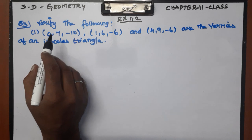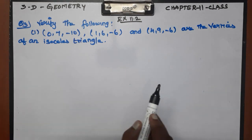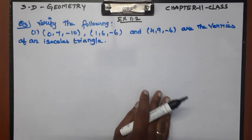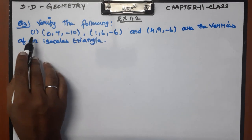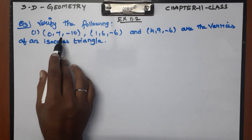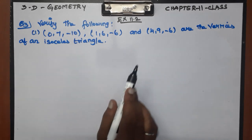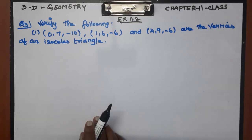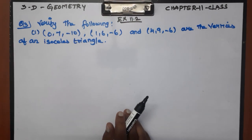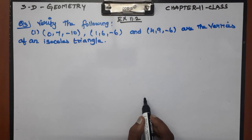Question number 3. This is the new edition book, Chapter 11; old edition, Chapter 12. We need to verify the following: there are 3 points — (0, 7, −10), (1, 6, −6), and (4, 9, −6). These 3 points are the vertices of an isosceles triangle. We will talk about the isosceles triangle.